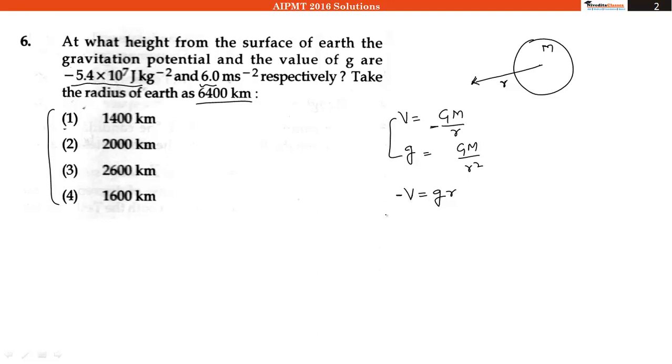So putting the values of V as 5.4×10⁷ and g as 6 into r. The r will be the radius plus our height, so it will be equal to R+h. If I take 6 to the other side and divide by 6,